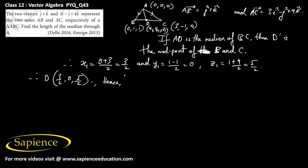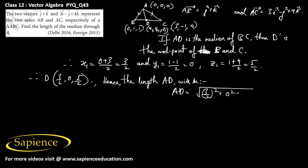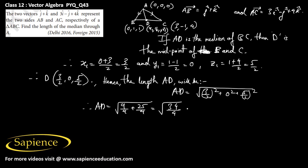Hence the length of the median AD through point A will be: AD = √((3/2)² + 0² + (5/2)²) = √(9/4 + 25/4) = √(34/4) = √34/2 units. This is the final answer.